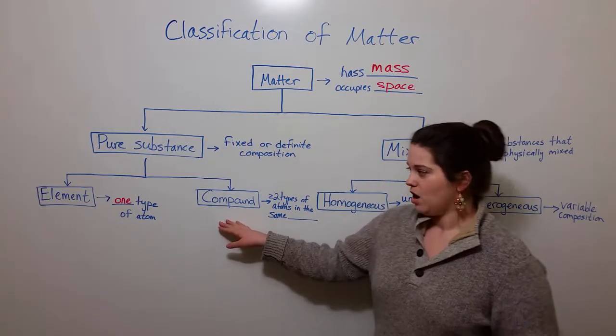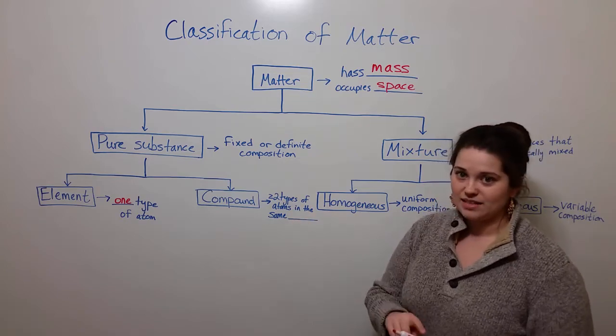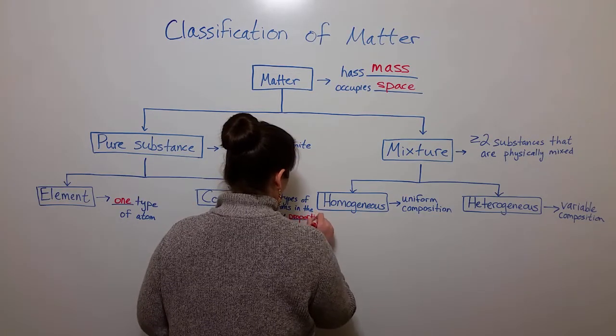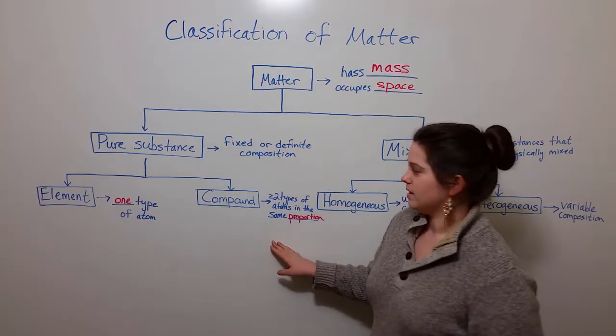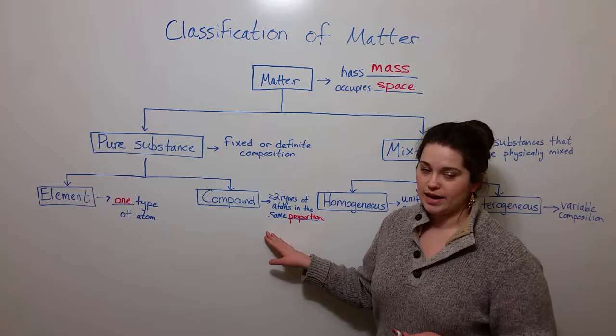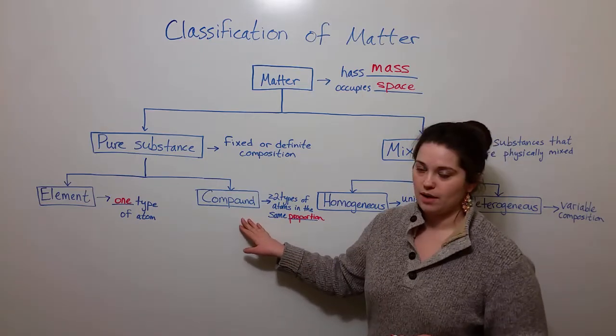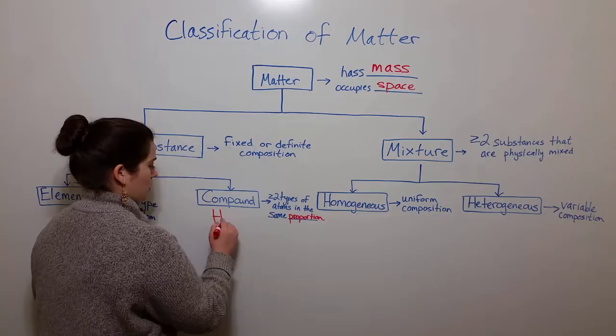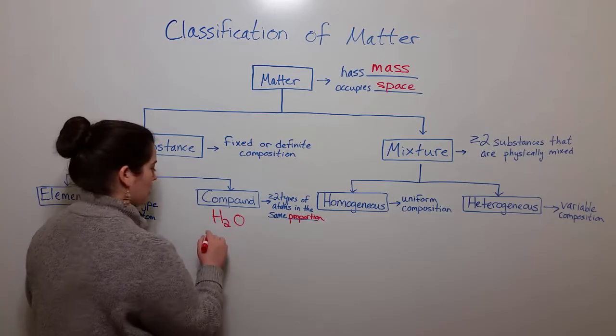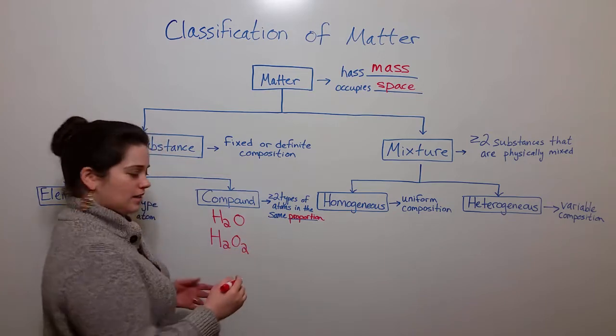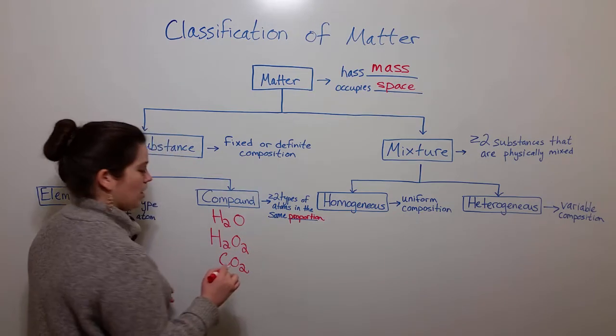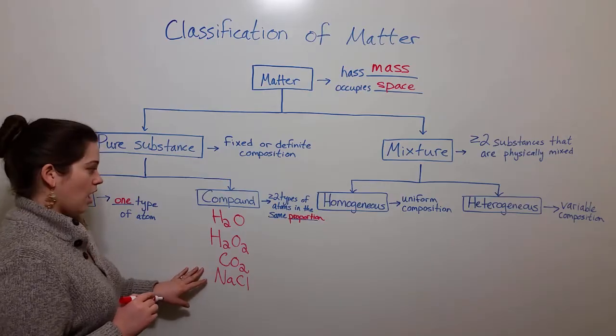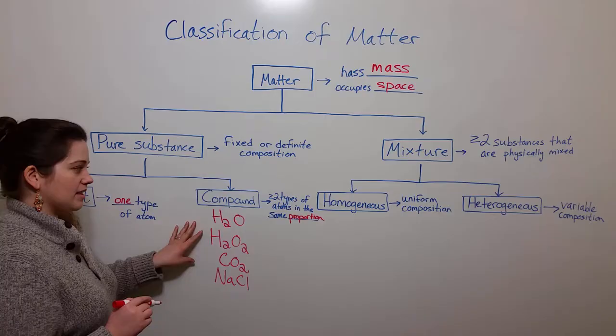Compounds, on the other hand, are things that are made of two types of atoms in the same proportion. Also notice that two types of atoms are the minimum, so it can be more than two types of atoms that make up a compound. So for example, when we think of compounds, we think of things like water, H2O, hydrogen peroxide, which is H2O2, carbon dioxide, which is CO2, sodium chloride, which is NaCl. These are all examples of compounds that are made up of two or more types of atoms in the same proportion.